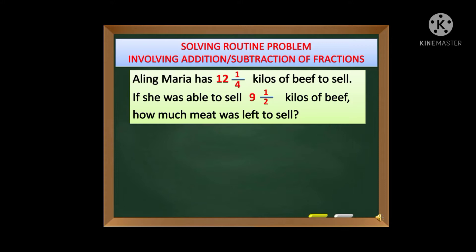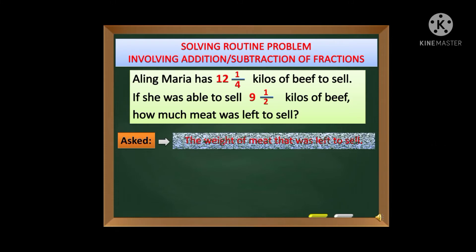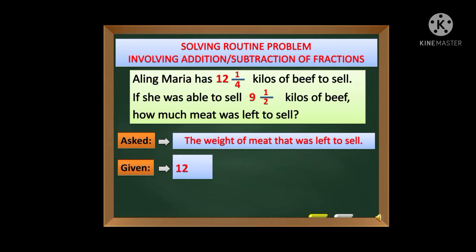Okay, para malaman natin ang sagot, alamin muna natin kung ano ang what is asked. Para masagot ang what is asked na makikita po natin siya sa katanungang 'how much meat was left to sell,' pero hindi po siya ang pinakasagot kundi atin pong i-re-rename, babaguhin po natin from question to statement. Kaya magiging siyang 'the weight of meat that was left to sell.' So ibig sabihin ilang kilo na lang ng karne ng baka ang kanyang ibibenta. So ano-ano naman ang pwede natin makuhang mga given facts? Yan, we have 12 and one-fourth kilos of beef to sell.